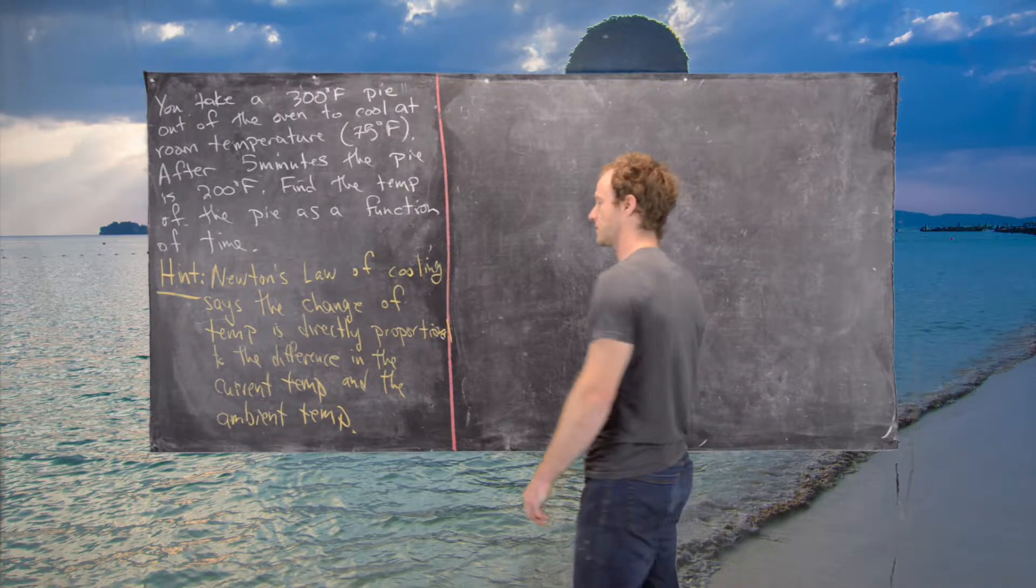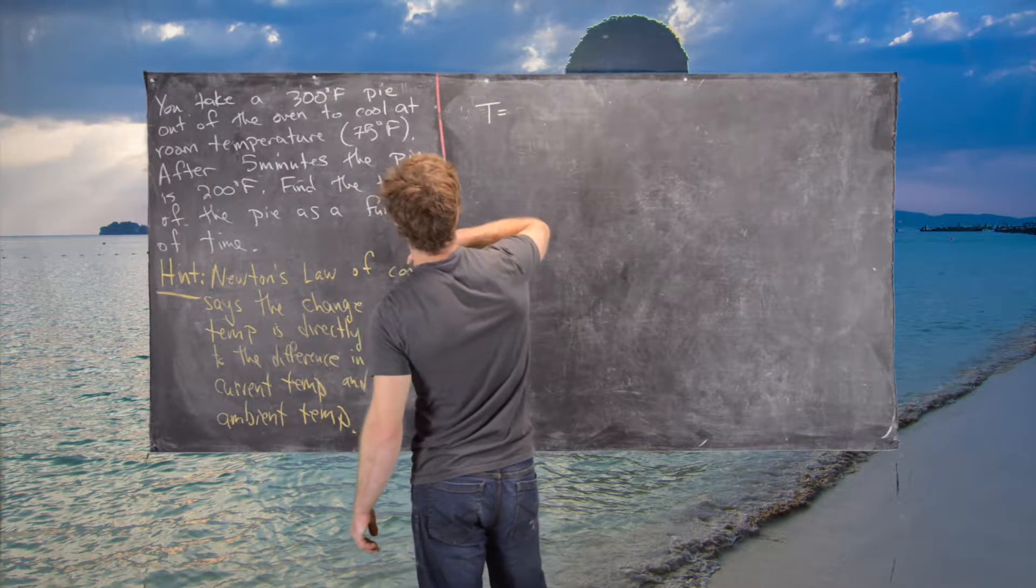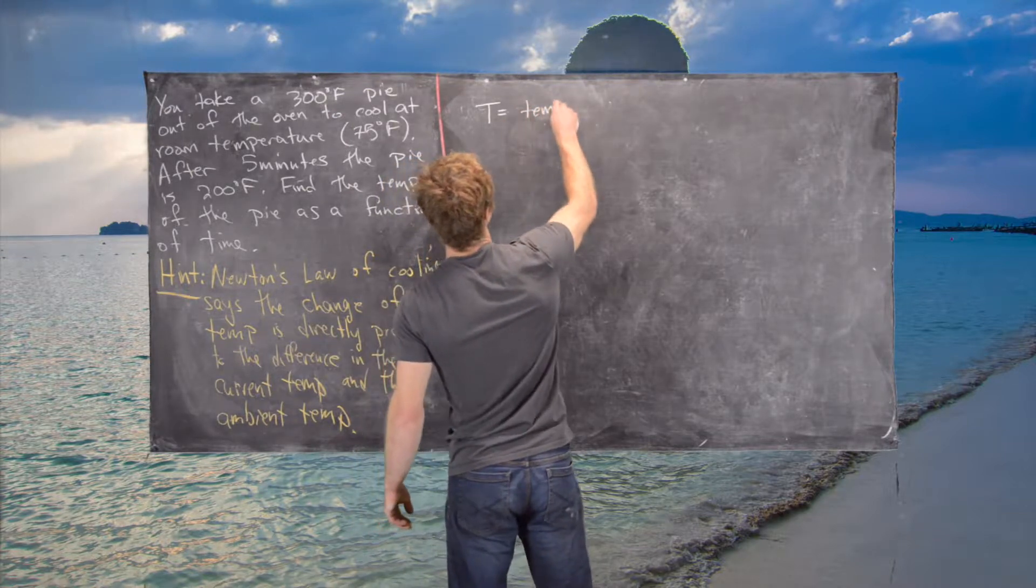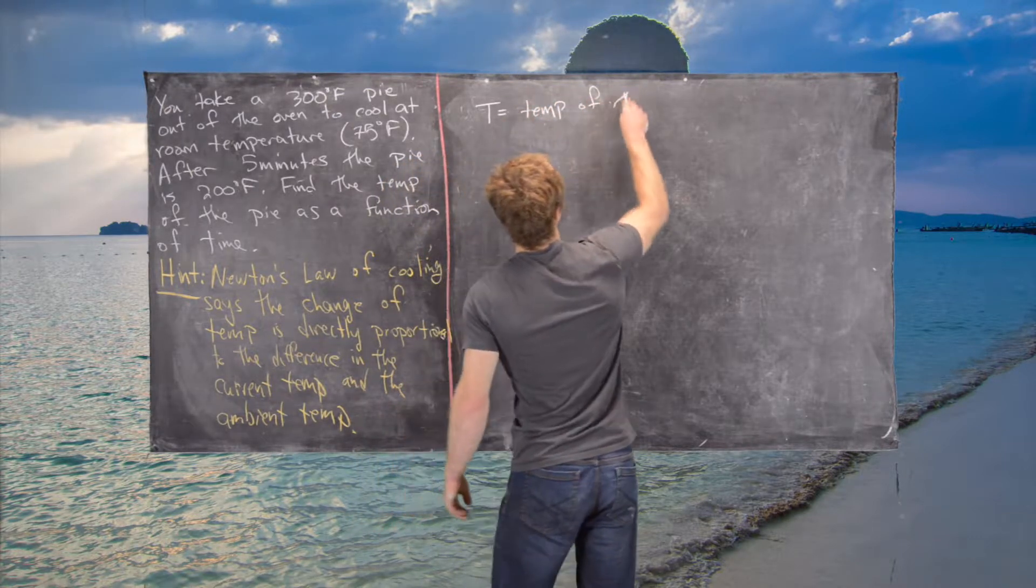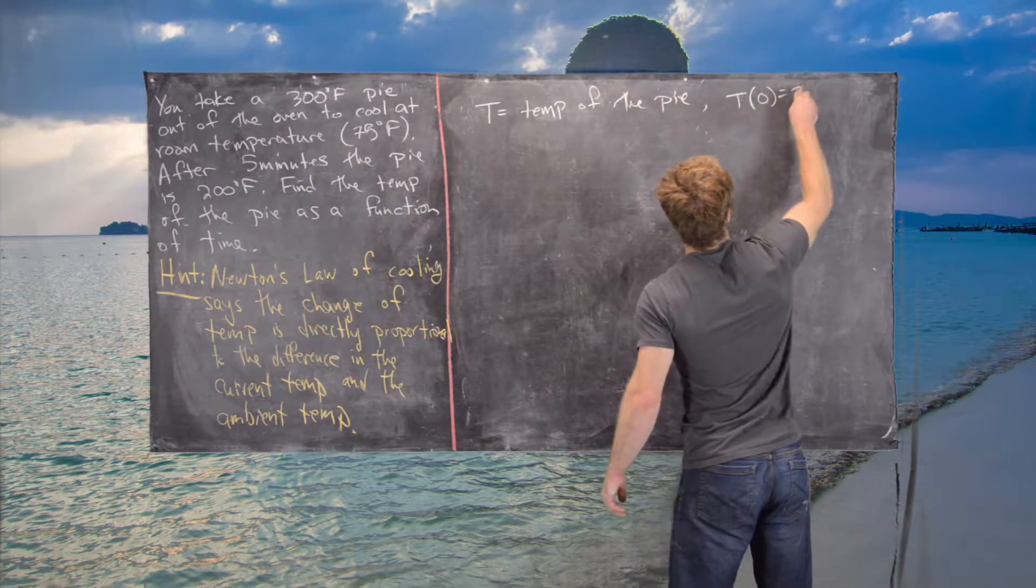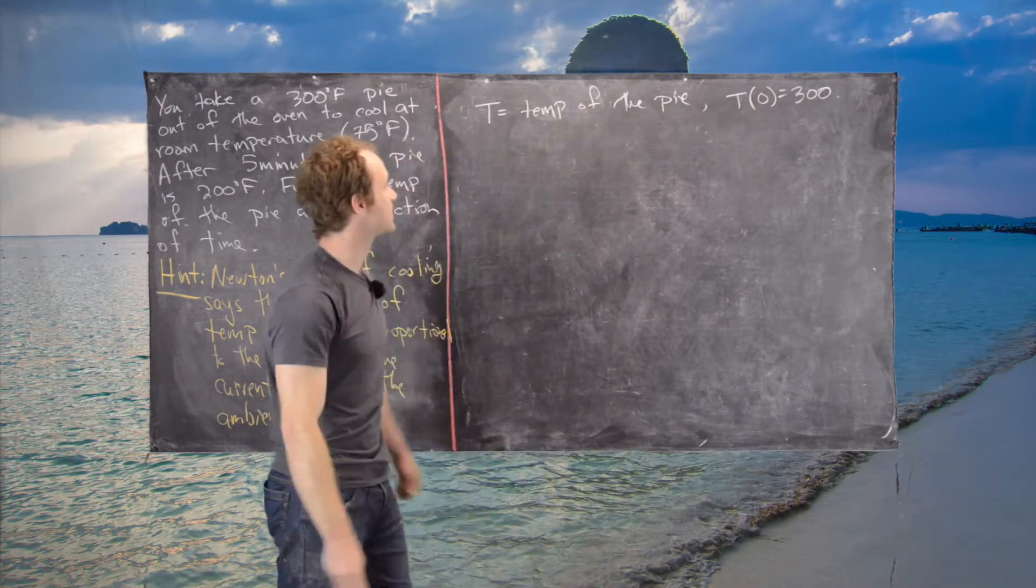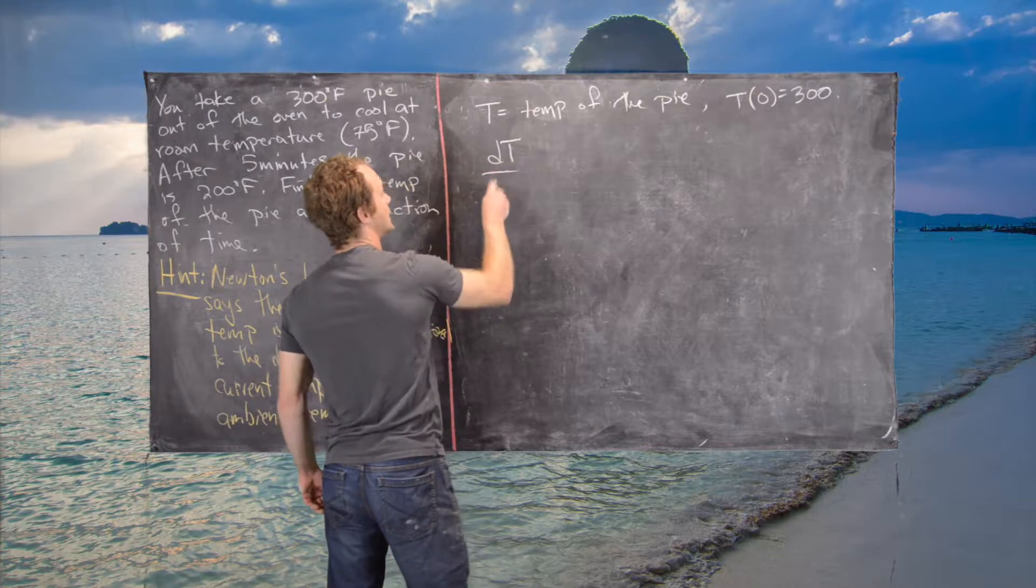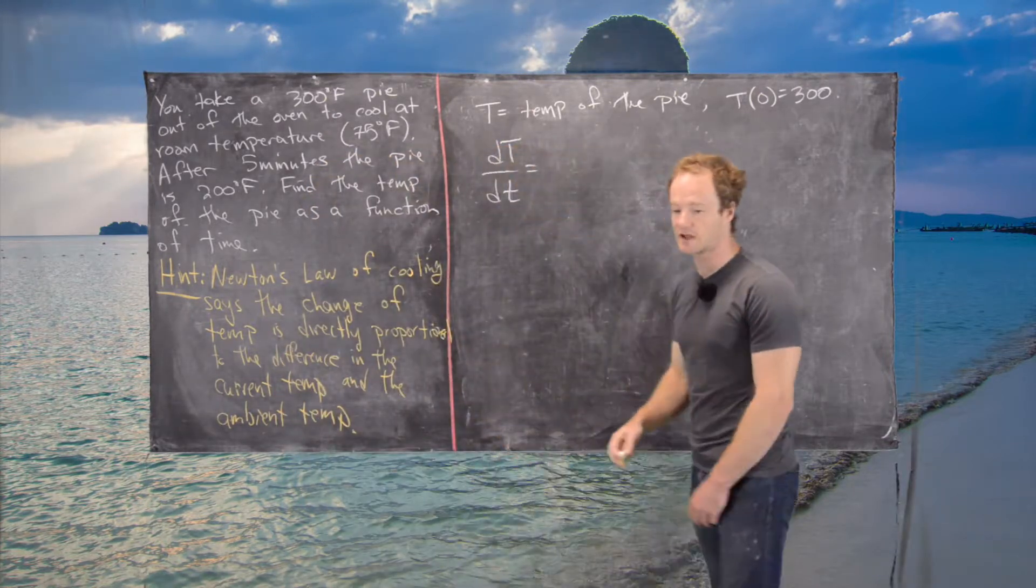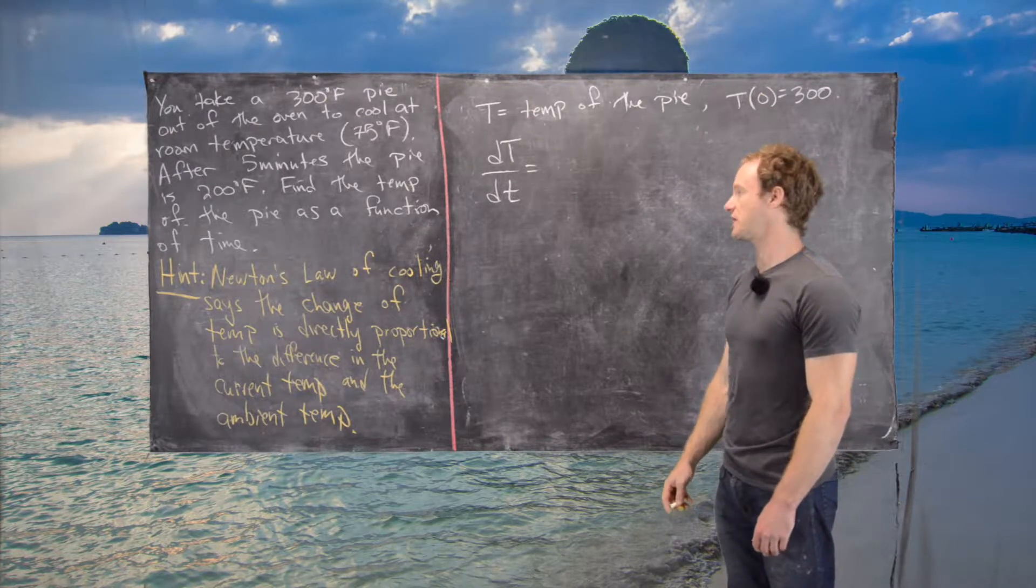We can write down a differential equation as follows. First, let's introduce some notation. Let T be the temperature of the pie, and we know that T(0) = 300. Then we know that the change in this temperature is directly proportional to the difference in the temperature and the ambient temperature.